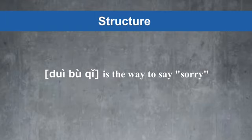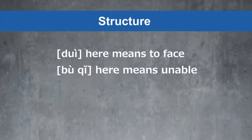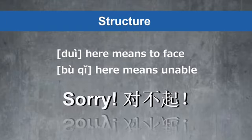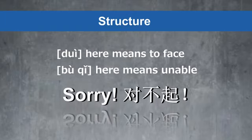对不起 is the way to say sorry. 对 here means 'to face,' and 不起 here means 'unable.' Together, you get the meaning of sorry: 对不起.